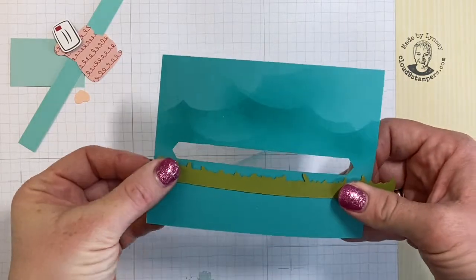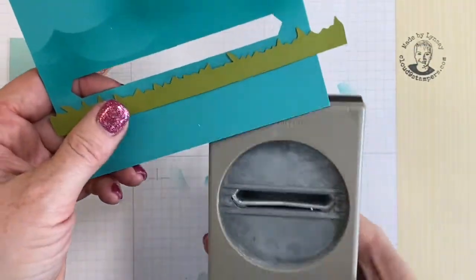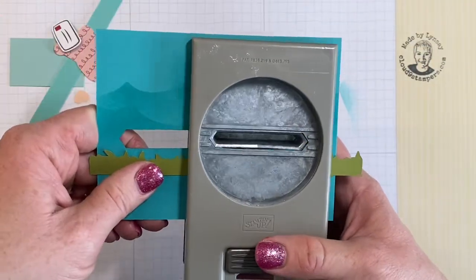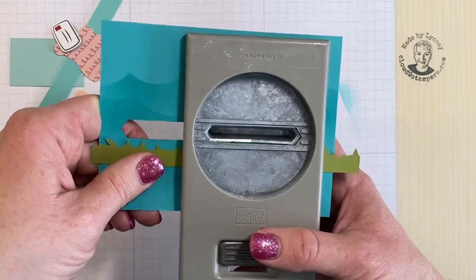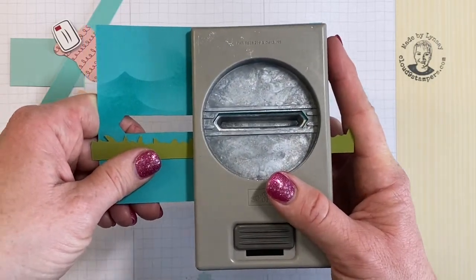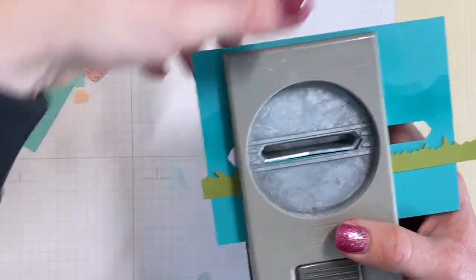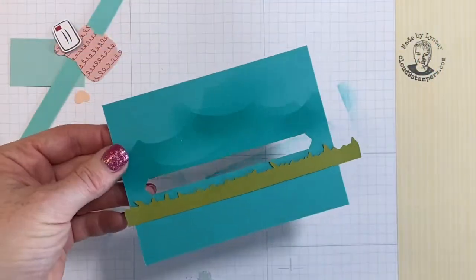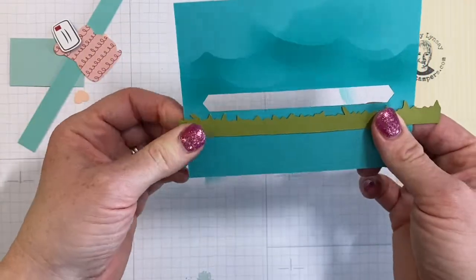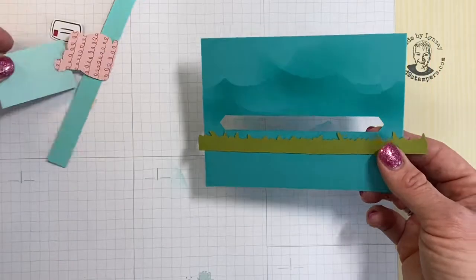This track was created using the classic label punch. I just stuffed it all the way as far as it'll go and I punched it. I lined it up with this side of the paper and punched it, then I moved it over to this side of the paper and punched it, and then I cleaned up whatever was in the middle. So that's how I got that track for you.